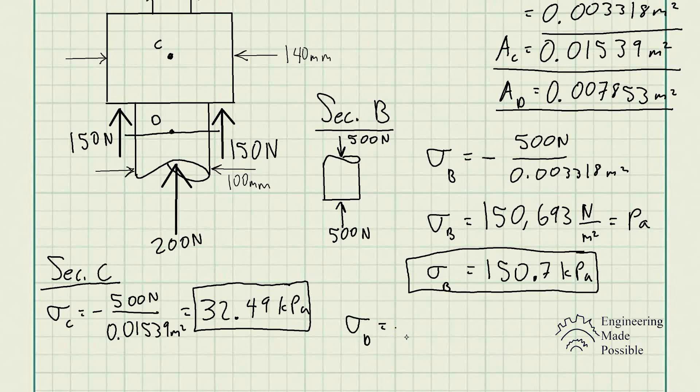So, the stress at D is also compressed. In this case, it's 200 newtons divided by the cross-sectional area, 0.007853 meters squared, and we get 25.47 kilopascals. Now, one thing I did forget is all the negatives. It should be negative, negative here. But, the sign convention just states whether it's compressive stress or tensile stress.